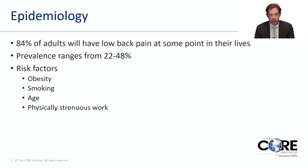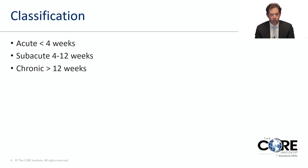Low back pain is very common. Anywhere up to 84% of people at some point are going to have pain in their low back. There are a lot of different risk factors, but common ones are age, weight, smoking, physically strenuous work, and trauma. We classify it into acute, subacute, and chronic. Acute is less than 4 weeks, subacute means 4 to 12 weeks, and chronic is greater than 12 weeks. Different causes fall into these categories, and how we treat them differs.